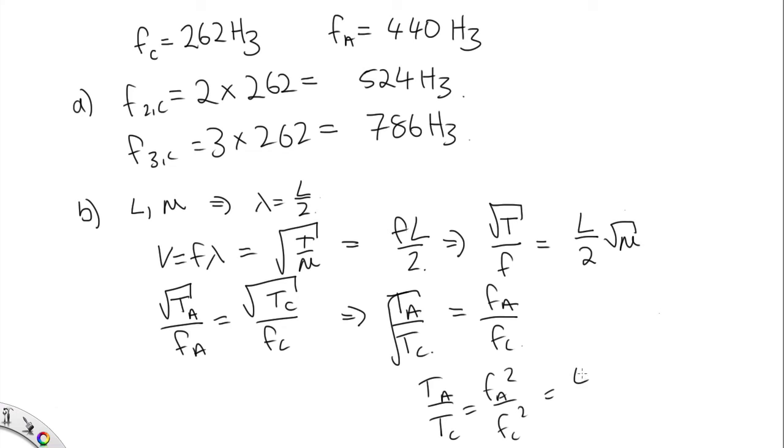Now FA is 440 squared over C squared, which is 262 squared. Solving that on the calculator, we end up with 2.82, the ratio of the tensions.